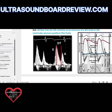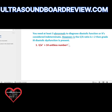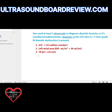You're also going to look at your deceleration time — the shorter or more steep it is, the higher the pressures. You also need a left atrial area using your BSA measurement, which must equal greater than 34 milliliters per meter squared. The third criteria is a TR jet greater than 2.8 meters per second. Once you have these three, you are good to go.